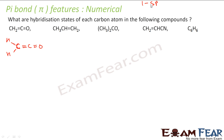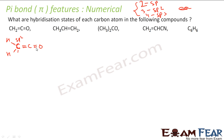If a carbon is linked to 2 atoms it is Sp, 3 atoms it is Sp2, and 4 atoms it is Sp3. This carbon atom is linked to 1 carbon atom and 2 hydrogen atoms — so it is Sp2. This carbon atom is linked to 1 carbon atom and 1 oxygen atom — so it is Sp2.